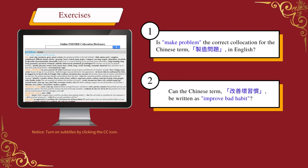Exercise one: Is 'make problem' the correct collocation for the intended Chinese term in English? Please search for the correct collocations and example sentences. Exercise two: Can the Chinese term be written as 'improve bad habit'? Please search for the correct collocations and example sentences.